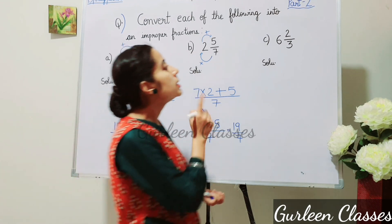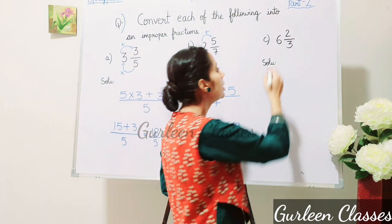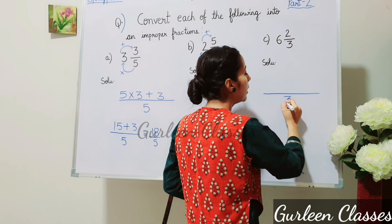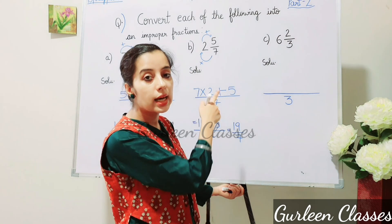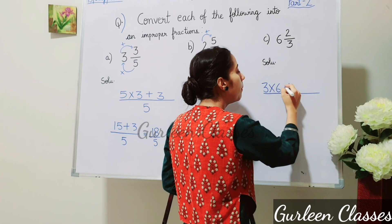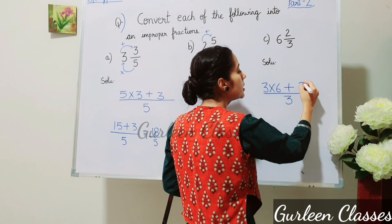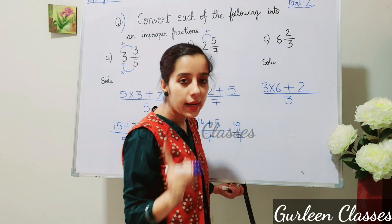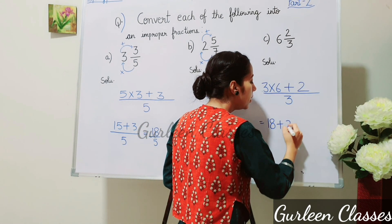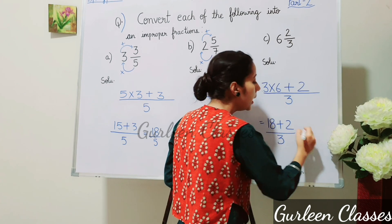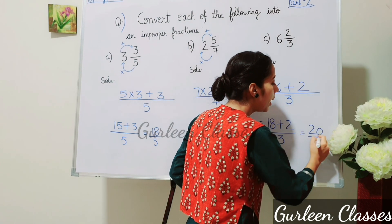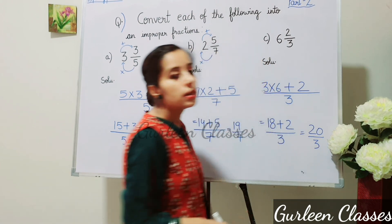Part C: 6 whole 2/3. The denominator is 3. Multiply: 3 × 6 = 18. Add numerator 2: 18 + 2 = 20. So the answer is 20/3. Students, I hope now you are able to convert mixed fractions into improper fractions.